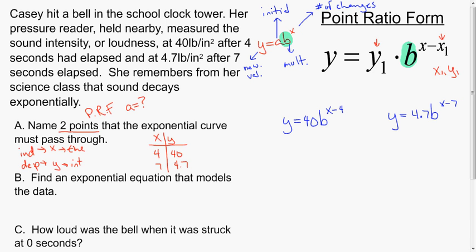If we assume that the multiplier is the same in both these scenarios, we can write this function as many different times as we want as long as we know a point on the curve. Here we know two, and because we want b to be the same in both of these, we could say they are on the same curve. So what I can do is put these two equations equal to each other: 40b to the x minus 4 equals 4.7b to the x minus 7.